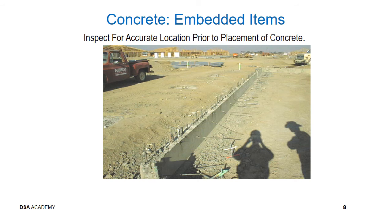Please refer to Section 2304.3.4 of 2019 CBC for sill plate anchor requirements: 5/8 inch diameter by 12 inch long bolts, spaced at 48 inches maximum, minimum 2 bolts for each piece of sill plate, 4 inch minimum and 12 inch maximum clearance to the end of the sill plate, and 7 inch minimum embedment into concrete or masonry. Please check your approved drawings for actual sill plate bolting requirements.